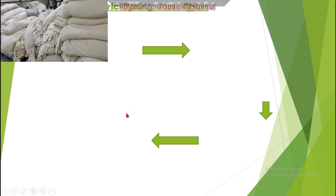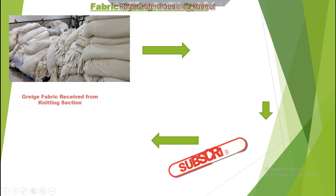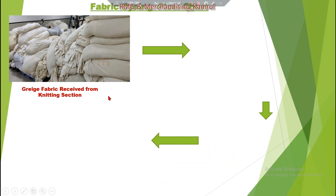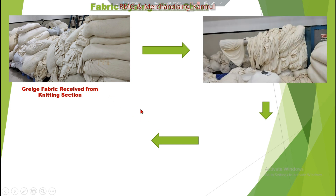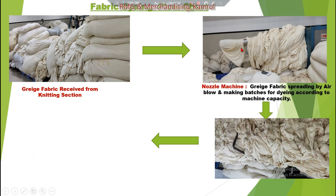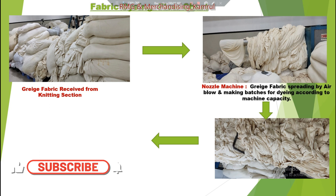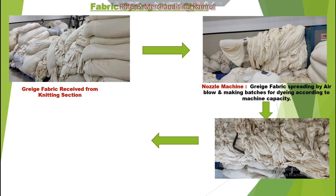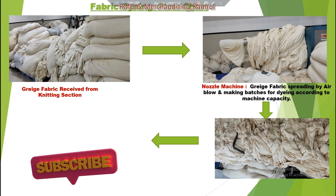Please look at the first slide of the PPT. First of all, see the gray fabric — all the gray fabric coming from the knitting section. The dyeing section receives the fabric from the knitting factory. In the batch section, this gray fabric goes through a nozzle machine where air is blown to spread the fabric. If required, the tube is joined, and batches are made according to the capacity of the dyeing machine.